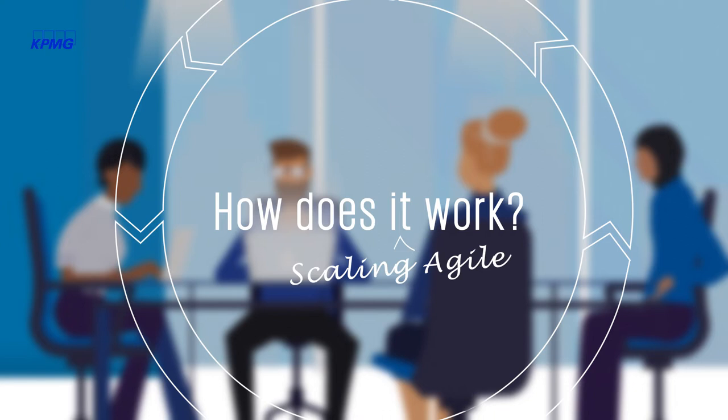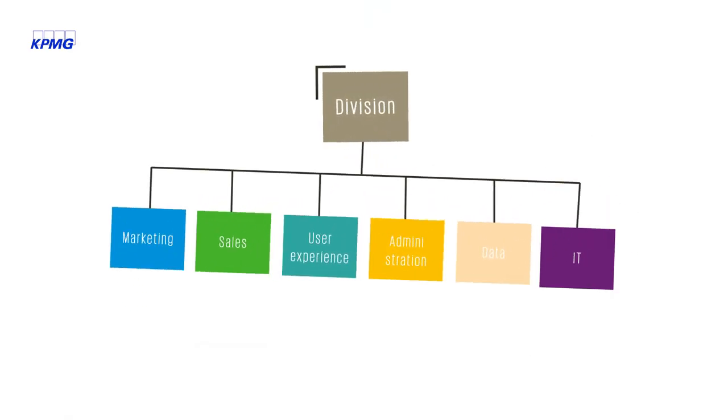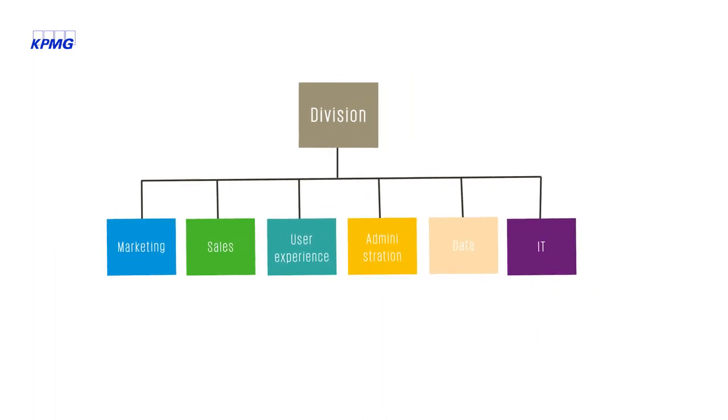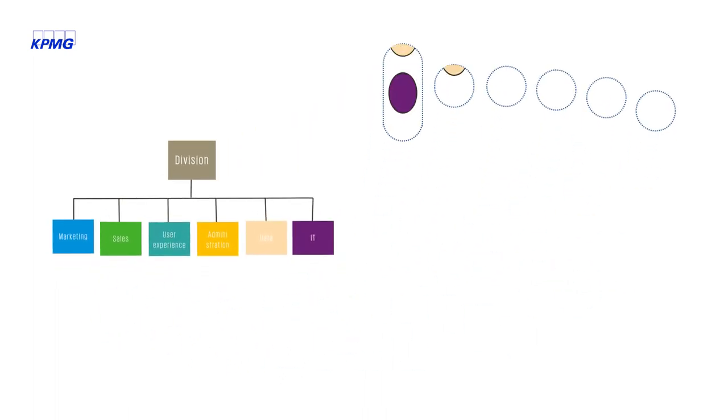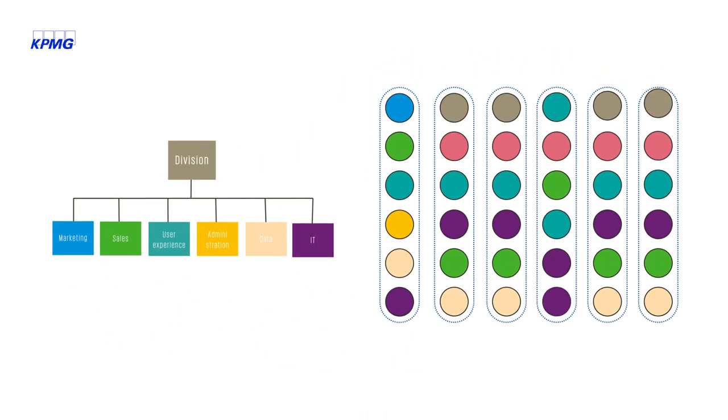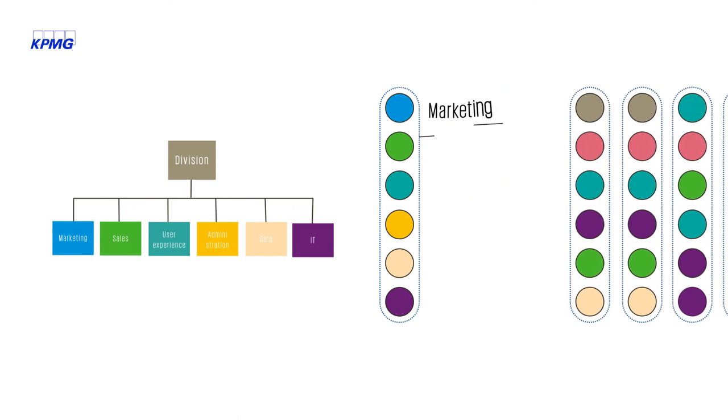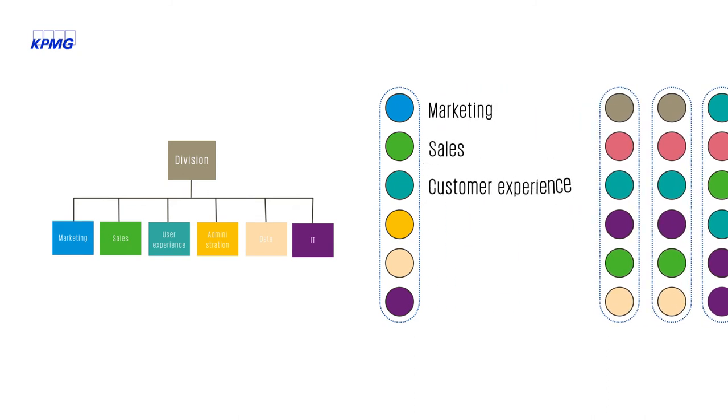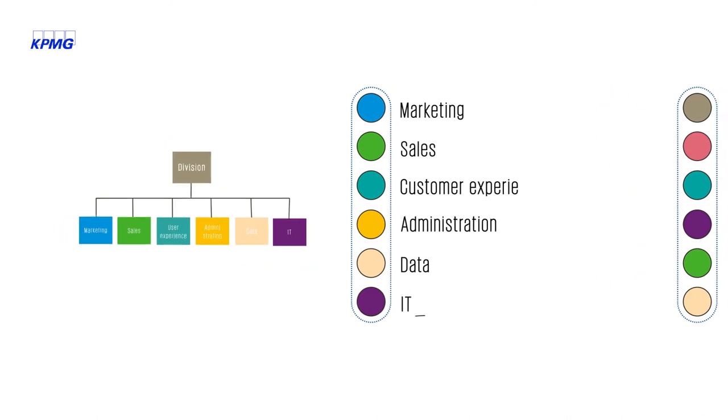How does it work? Agile changes the way the entire organization operates. Hierarchical departments with managers are transformed into small self-steering teams. These teams consist of members with different backgrounds, for example from marketing, sales, customer experience, administration, data, and IT.